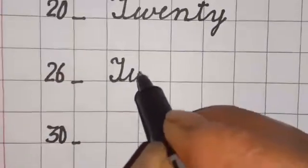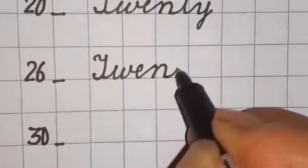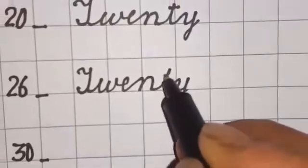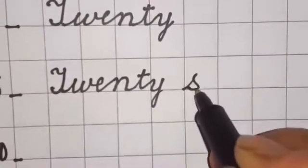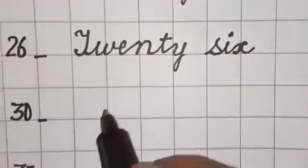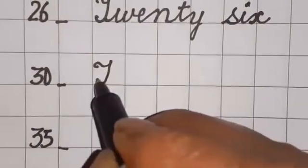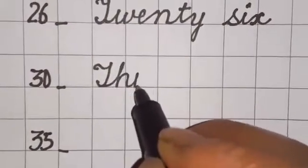T-W-E-N-T, T-W-E-N-T-Y, twenty, S-I-X, six. Thirty: T-H-I-R-T-Y, thirty.